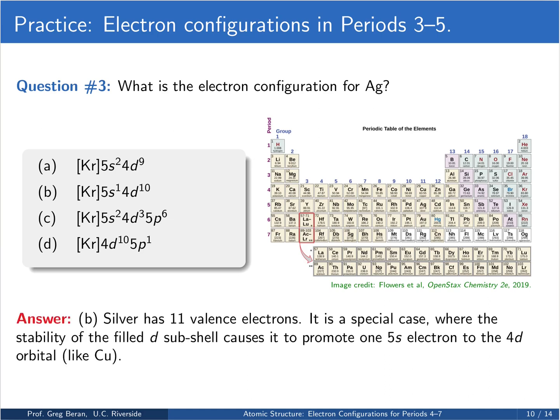Alright, so silver has 11 valence electrons. This is another one of these special cases. Naively, you might expect it to have a 5s2 4d9 configuration, but instead it promotes one of those s electrons to the d shell to give us a completely full 4d shell and leaving us with a 5s1 4d10. So this one is analogous to copper.